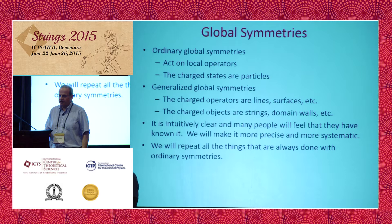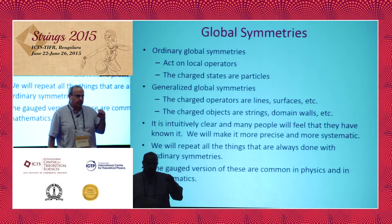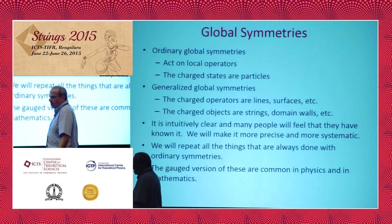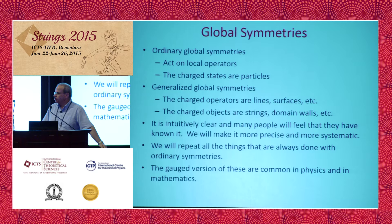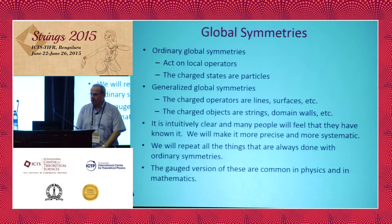The gauge version of these symmetries is well studied. Historically, it first appeared, as far as I could tell, in the paper of Kalb and Ramond. They studied the two-form gauge field that couples to strings, generalizing the way an ordinary gauge field couples to particles in electrodynamics. The second time is in what is known in lattice gauge theory as the Villain formulation, where you put the gauge fields on plaquettes or cubes, and interactions are products around the object. It's also in string theory and supergravity — these higher-form gauge fields are ubiquitous.